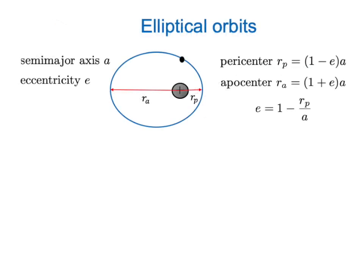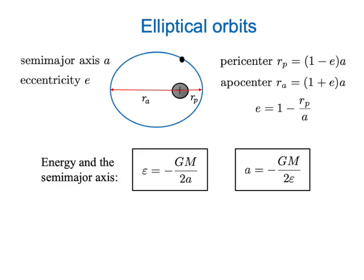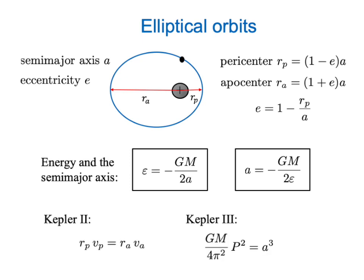For elliptical orbits, we characterize our ellipses by the semi-major axis — half of the long axis of the ellipse — and the eccentricity e. The paracenter and epicenter distances are the closest and farthest points on the ellipse from the planet's center, and they're related to the eccentricity and the semi-major axis. The semi-major axis is also simply related to the energy of the orbit: if you know one, you can determine the other.